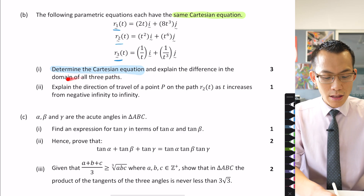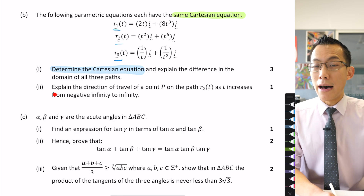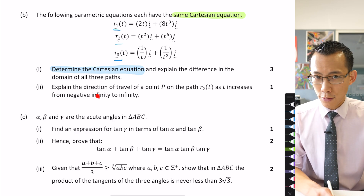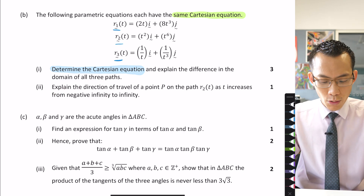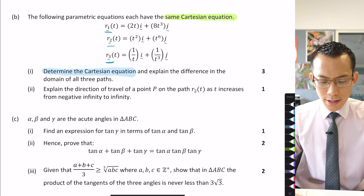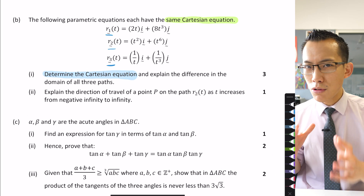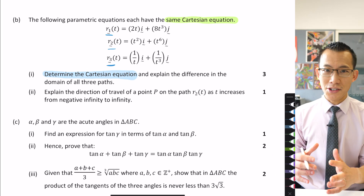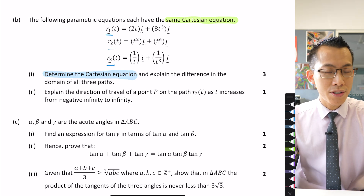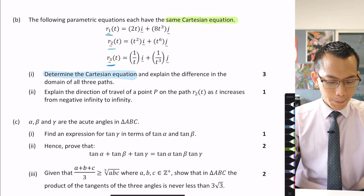Part one says: explain the difference in the domain of all three paths. Then part two starts talking about the direction of travel. We'll get onto all of that shortly, but first let's wrap our head around how a single Cartesian equation can have multiple parametric equations and the difference that that makes.